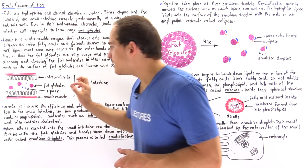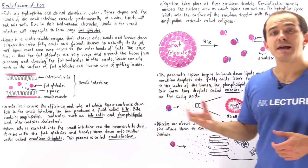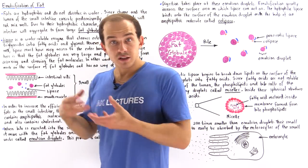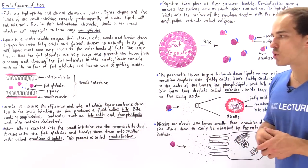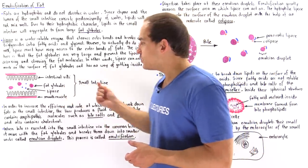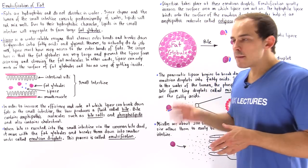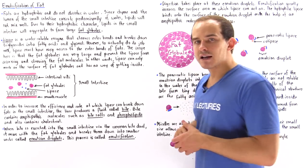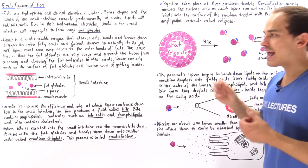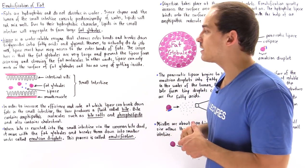These tiny blue structures represent pancreatic lipase — the enzymes that break down fats and lipids into fatty acids and glycerol. Now, lipase is water soluble, which means it cannot mix with the fat globules. Because of the very large size of the fat globules, lipase molecules cannot actually access the interior of the fat globules since they cannot dissolve into them.